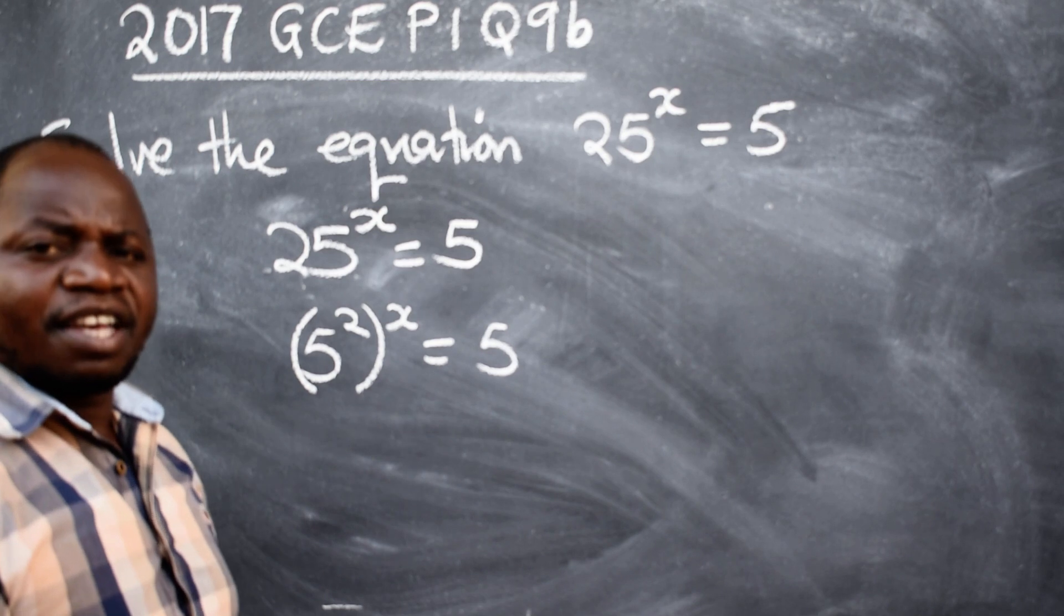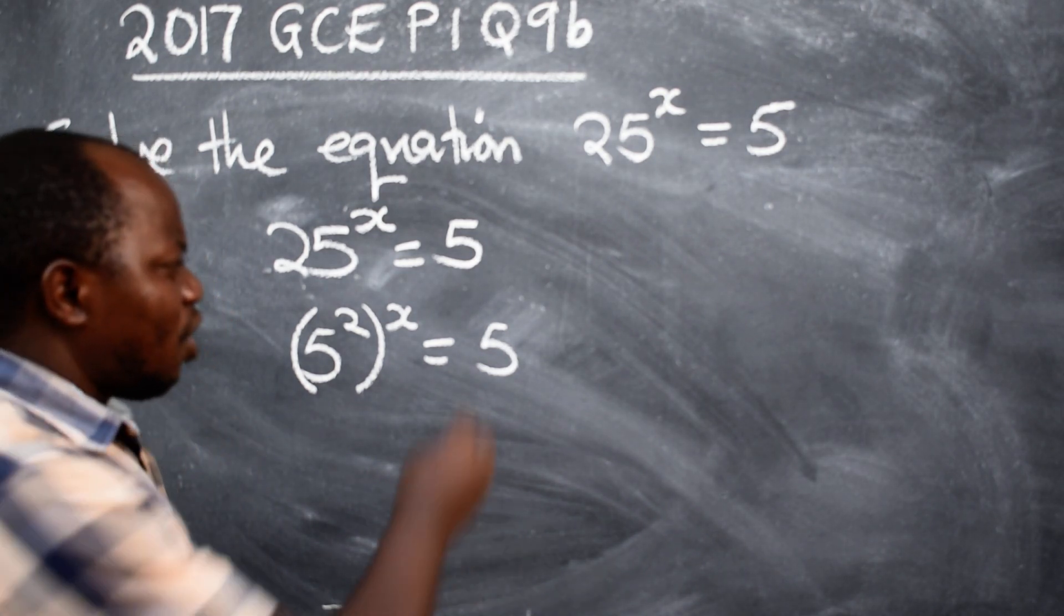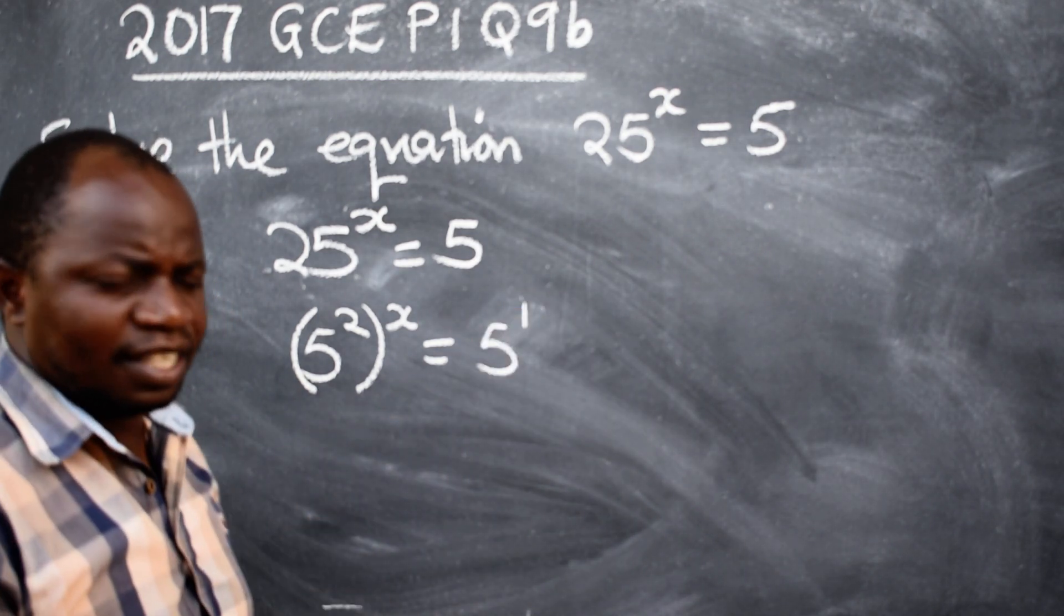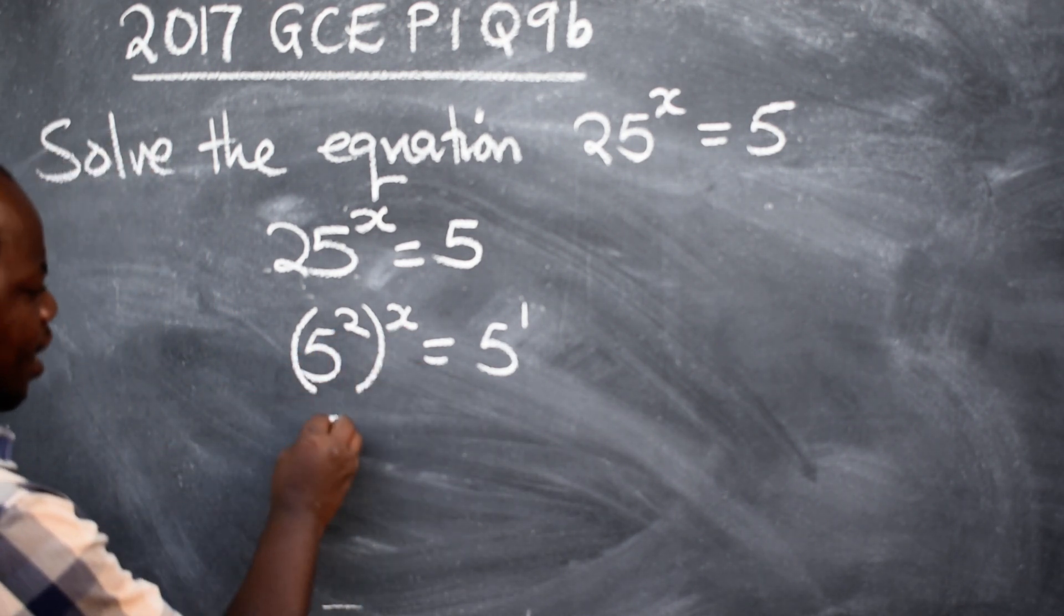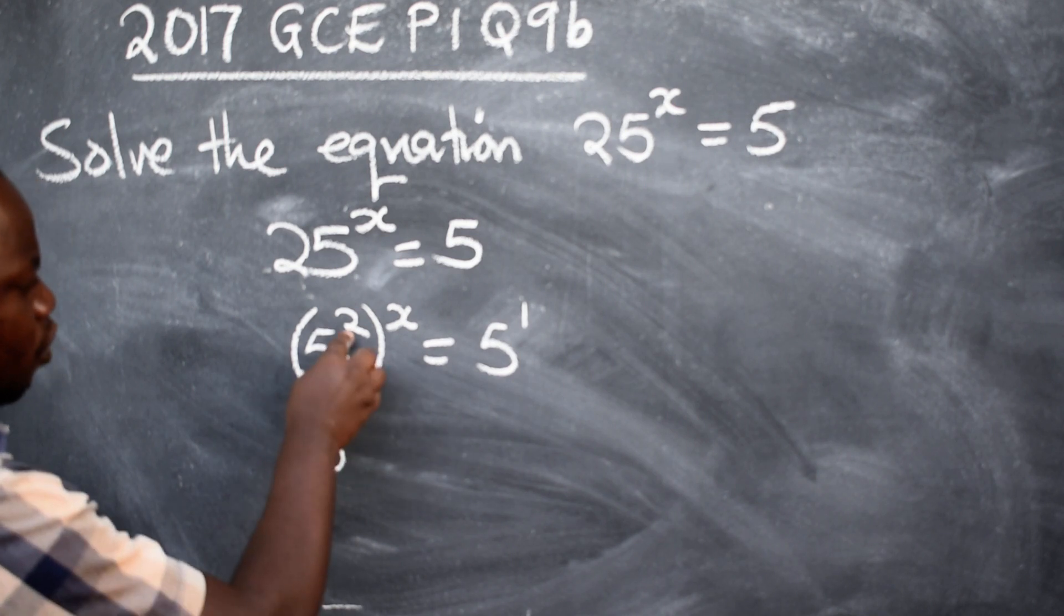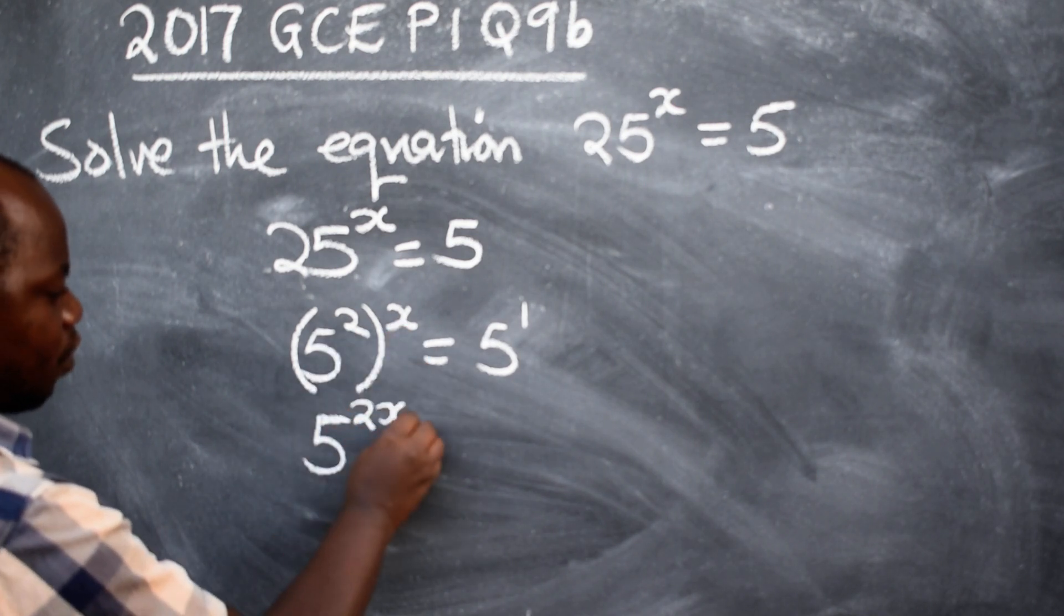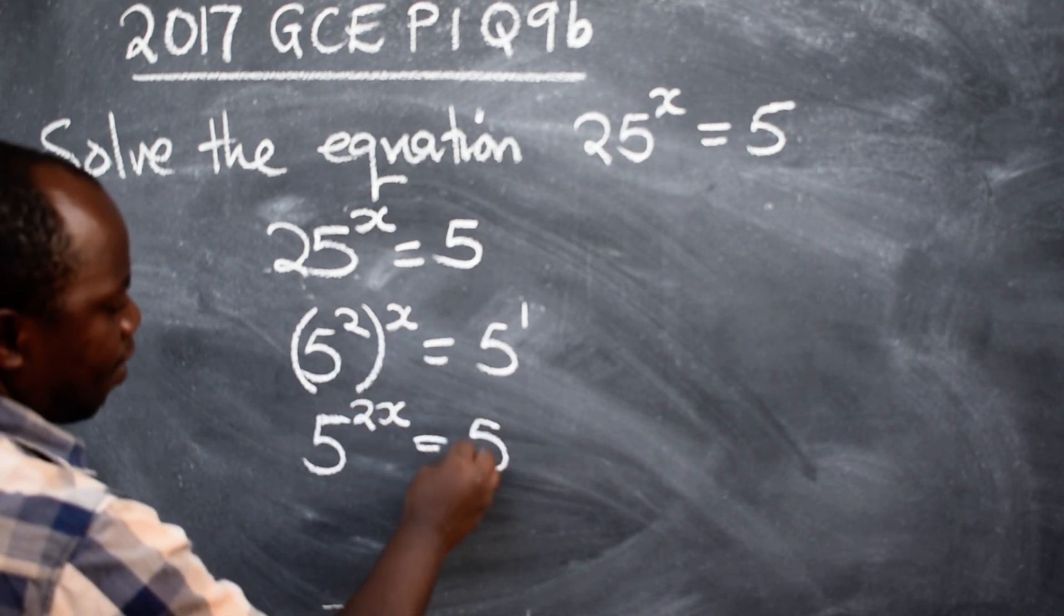This 5 here has a power, but what power is that? 1. Don't forget that. So, power and power can be multiplied. So, we can say 5, 2 times x here to give us 2x is equal to 5 to the power 1.